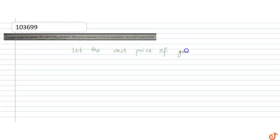So in this question, a trader marks his goods 20% above the cost price. Let the cost price of goods equal X rupees. Then marked price is given as cost price plus 20% of X, because it is 20% above the cost price.